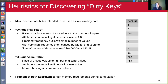The first heuristic is the so-called unique row ratio. We look at the ratio of distinct values of an attribute to the number of tuples. In clean data, this ratio should be one. We would say that an attribute is a potential key if this heuristic is somewhat close to one.